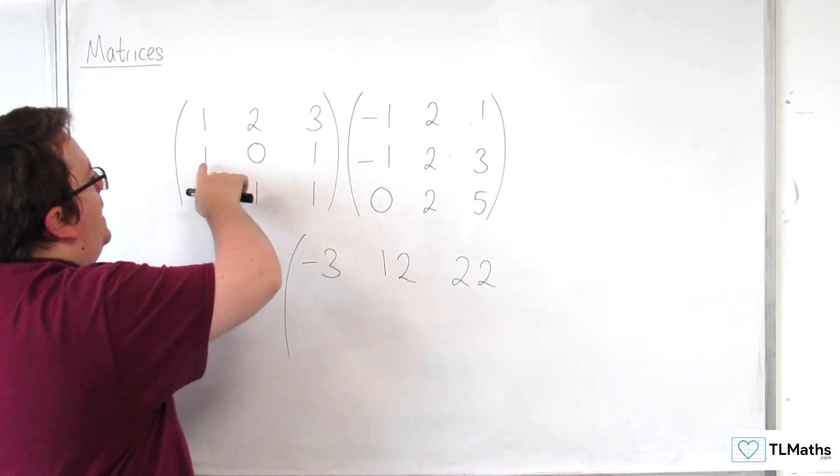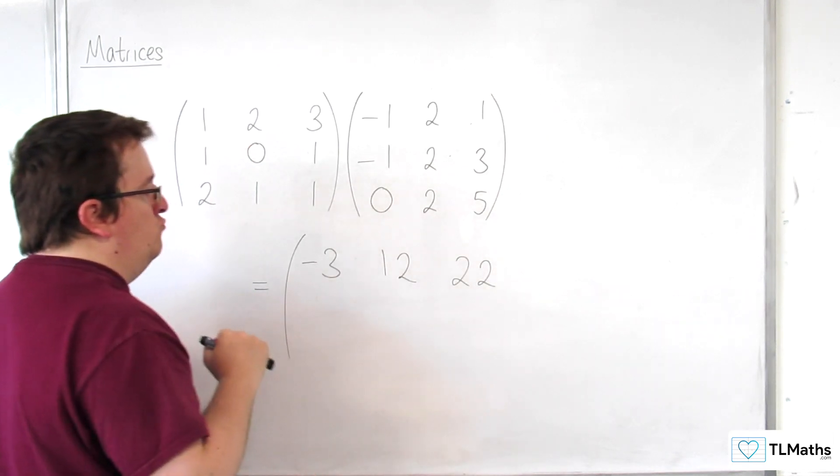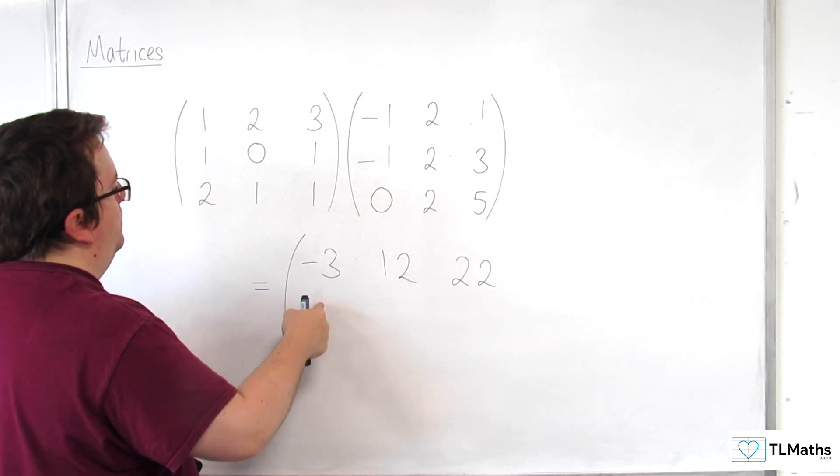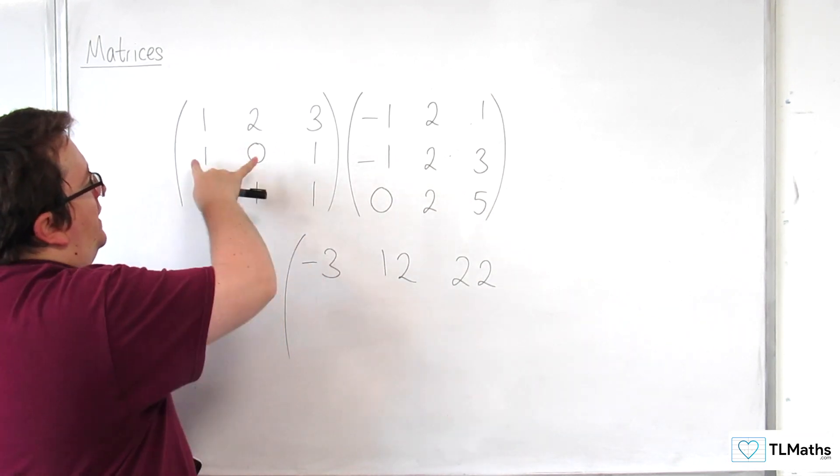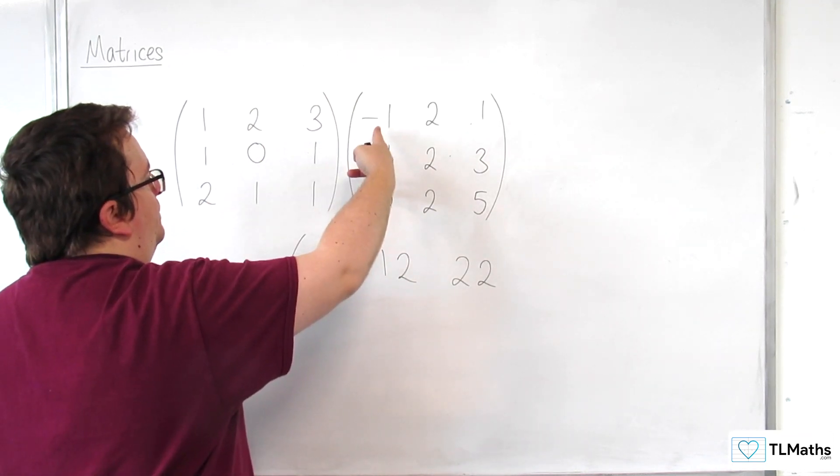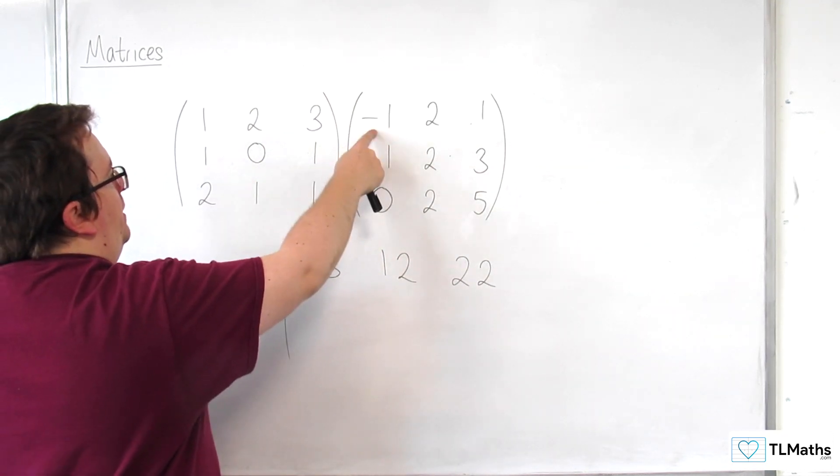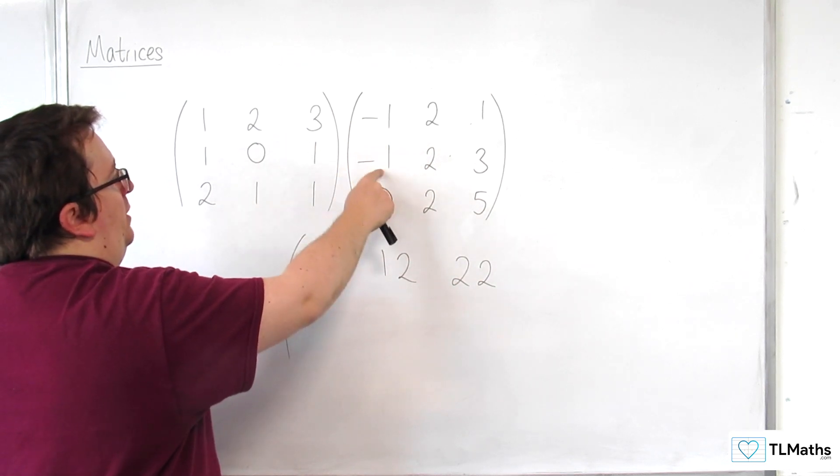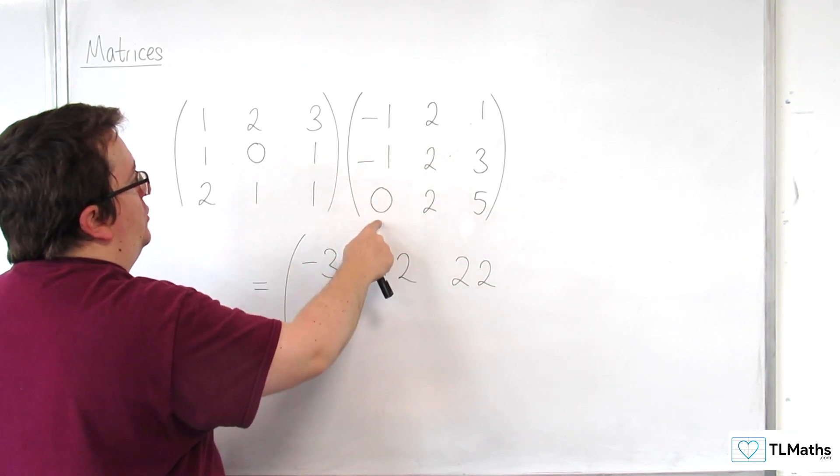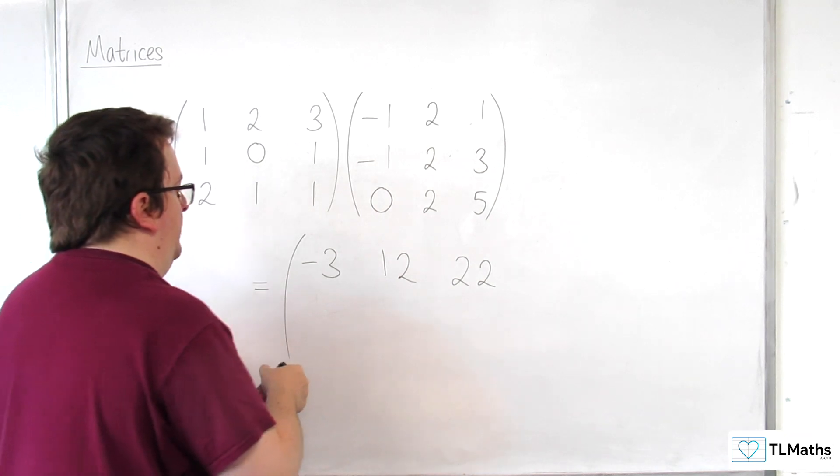Then, we're going to get, for our next row here, for this position here, we're going to have the middle row times by the first column. So, 1 times -1, plus 0 times -1, plus 1 times 0. And so, it's just going to be -1.